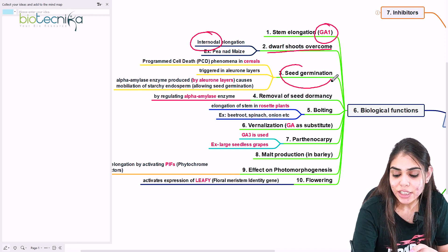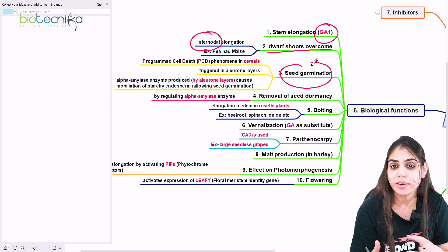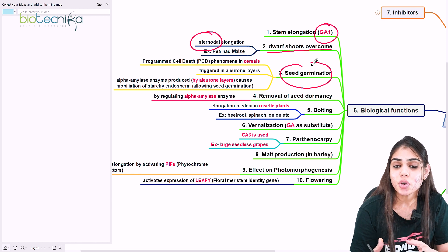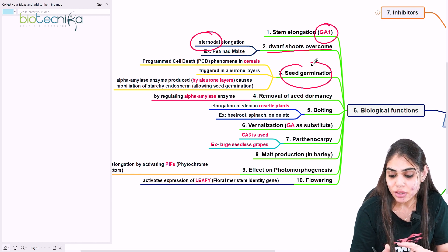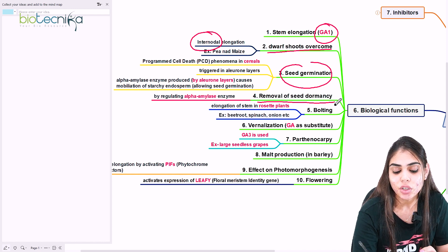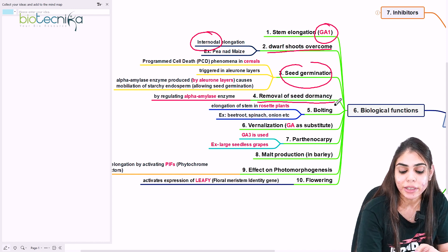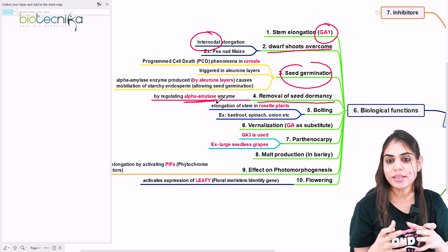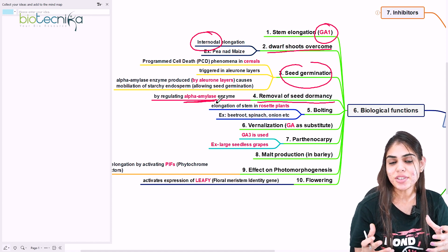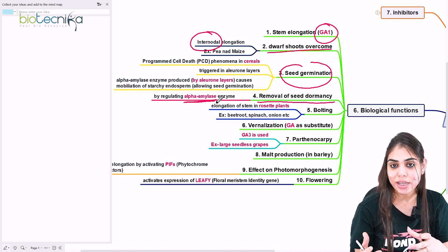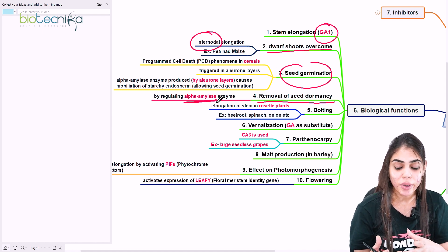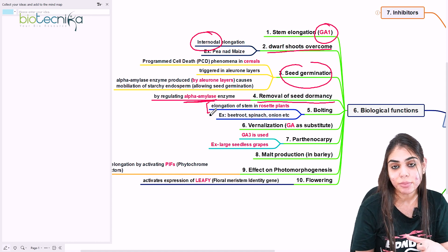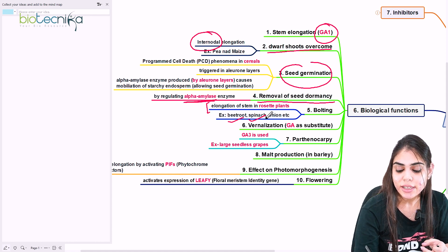Gibberellic acid also helps in the seed germination process by inducing transcription of alpha-amylase enzyme and mobilizing food in the starchy endosperm, thus removing seed dormancy. It also helps in the bolting process — in rosette plants like cauliflower, spinach, and beetroot that have no stem, gibberellic acid can induce stem elongation, which is called bolting. It also helps in vernalization — plants that require cold temperature for flowering can use gibberellic acid as a substitute.